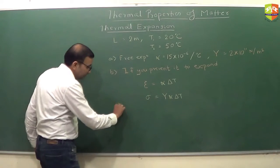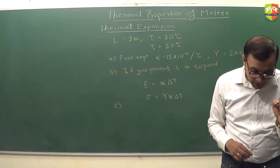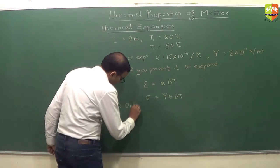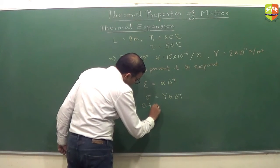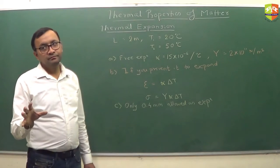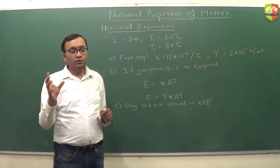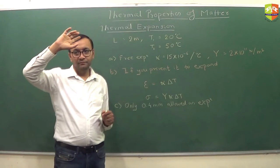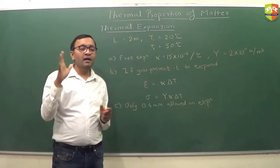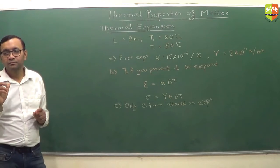C part. It is permitted to expand only by 0.4 mm. If you are allowing it to expand only 0.4 mm, now what is the stress? So free expansion is what? 0.9 mm. You are allowing it to expand 0.4 mm. So 0.5 mm strain corresponding to 0.5 mm will be there. Getting it? When you are completely restricting it, strain corresponding to 0.9 mm was there. When you are allowing it to expand 0.4, 0.5 is the restriction.